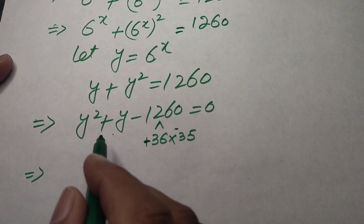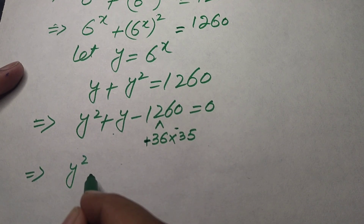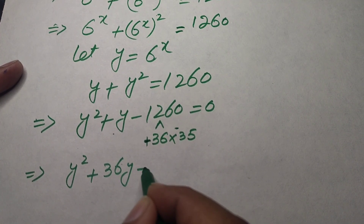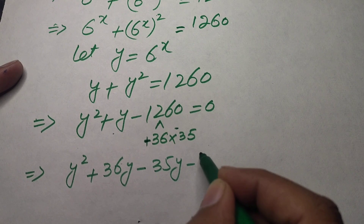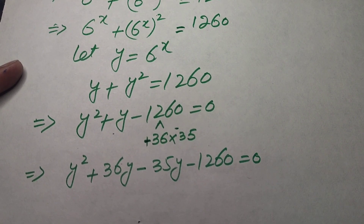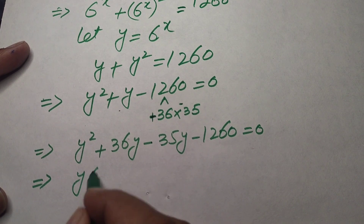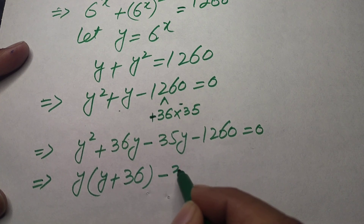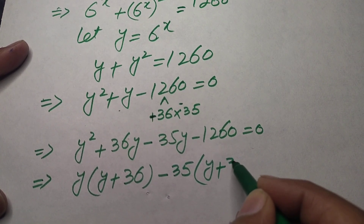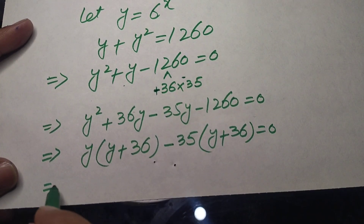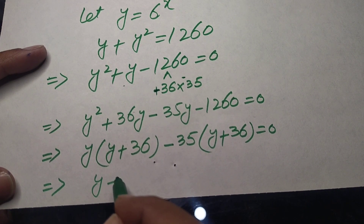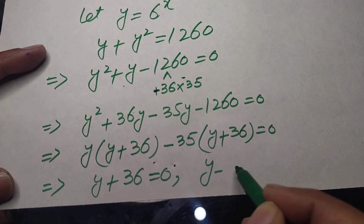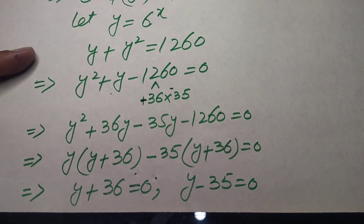So we write the factored form as y squared plus 36y minus 35y minus 1260 equals 0. Taking y common from the first two terms gives y(y + 36), and taking 35 common from the last two gives 35(y + 36), equal to 0.